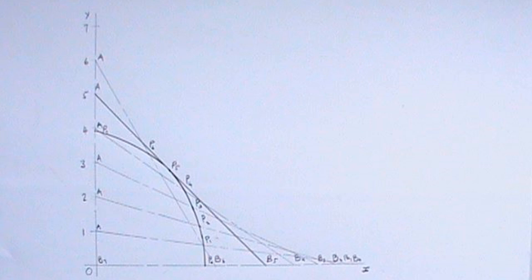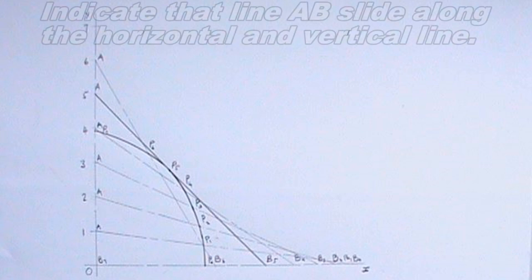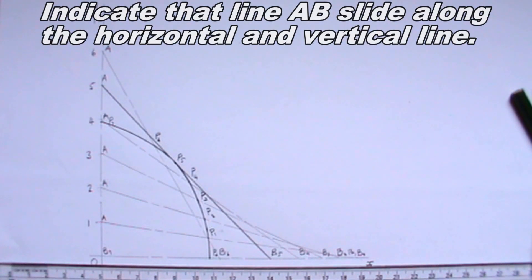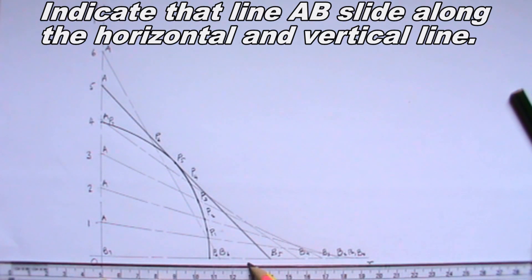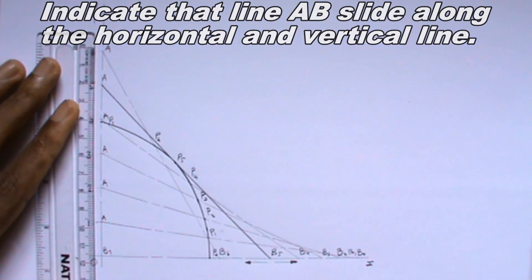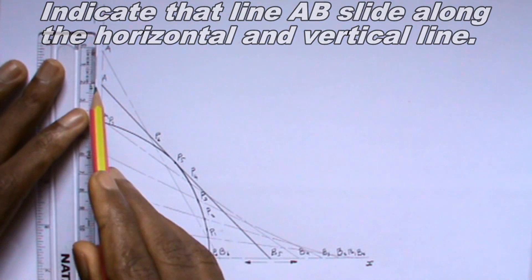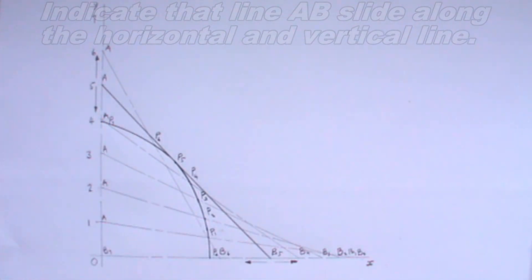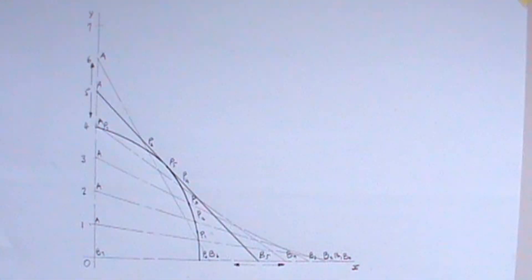The p-points has been produced successfully but it is important I indicate that line AB slides along the horizontal and vertical line. This mechanism loci have been drawn successfully.